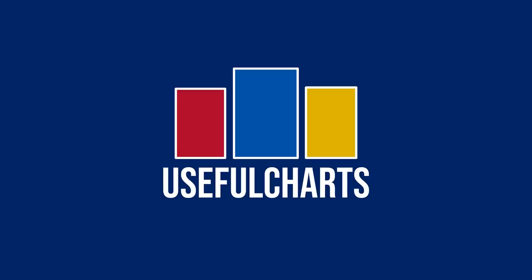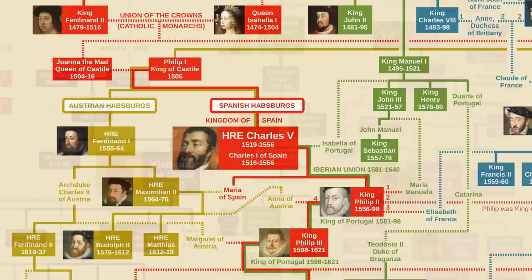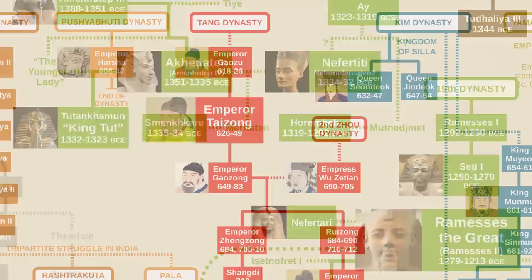On this channel, I've covered the family trees of famous dynasties from all over the world and from all periods of history, from the pharaohs of ancient Egypt, to the medieval Tang dynasty of China, to the current line of succession to the British throne. But there's one family that I've not yet talked about: my own.